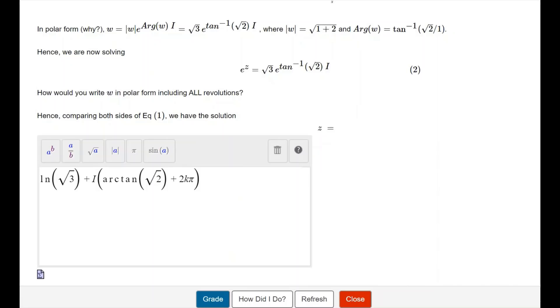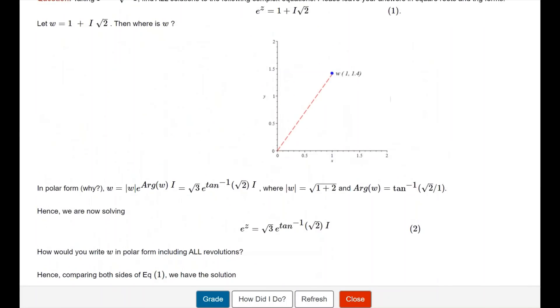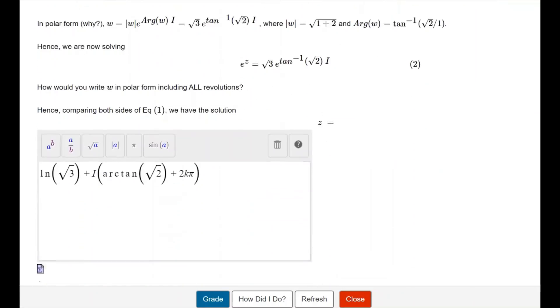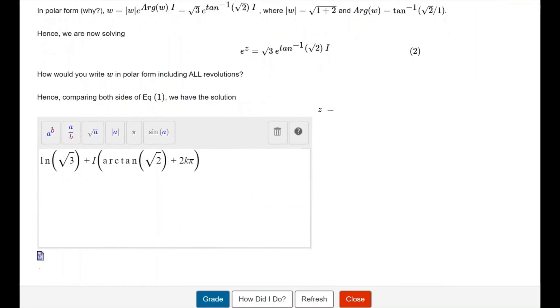However, since we are considering all revolutions, we have to consider the point z at this place shown in the figure every time it revolves a full revolution. We add one full revolution of 2π each time. So we consider a number k which is an integer and add 2kπ to arctan(√2), so our answer is complete and considers all revolutions.